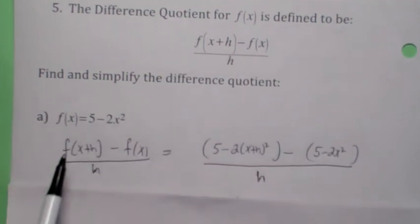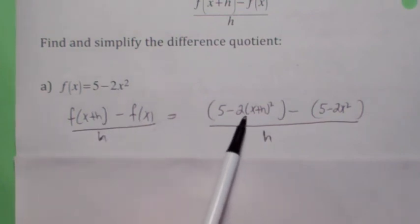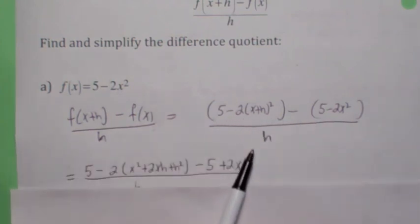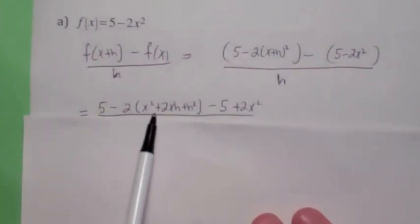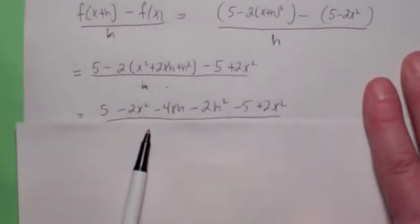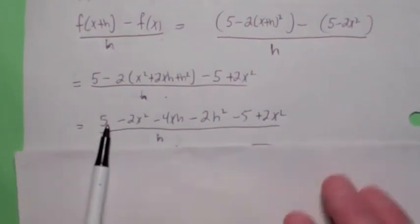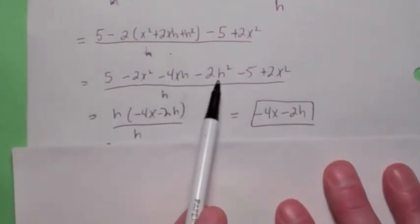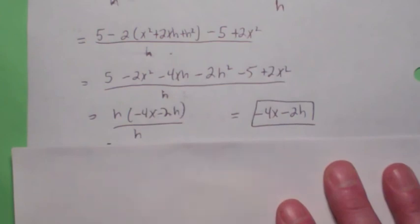So for this function, look, if this is f of x, then this is f of x plus h right here. This is f of x. Make sure you put parentheses around f of x. When you multiply f of x plus h out carefully, x plus h squared becomes this. When you distribute the negative 2, you get this. So the numerator becomes this. The fives cancel, the 2x squares cancel, and what you have left, you can factor an h out of this term and this term, cancel the h, and there is your answer, negative 4x minus 2h.